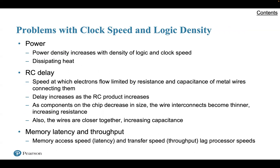What about the problem with clock speed and logic density? Traditionally, the dominant factor in performance gains has been increasing the clock speed and logic density. However, as clock speed and logic density increase, a number of obstacles emerge. First, power: as the density of logic and clock speed on a chip increases, so does the power density, making it difficult to dissipate all that heat. Second, RC delay: the speed at which electrons can flow on a chip is limited by the resistance (R) and capacitance (C) of the metal wires connecting transistors. The delay increases as the RC product increases — as components shrink, wires become thinner, increasing resistance, and wires are closer together, increasing capacitance.